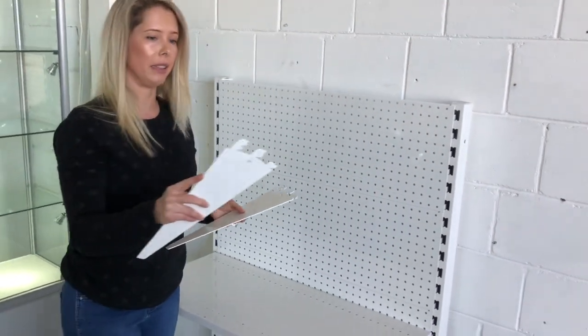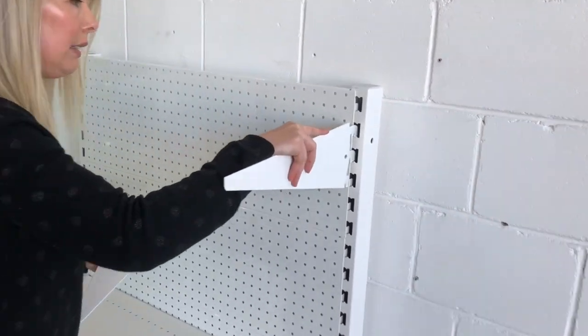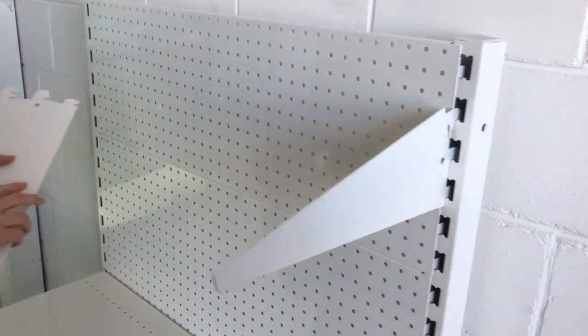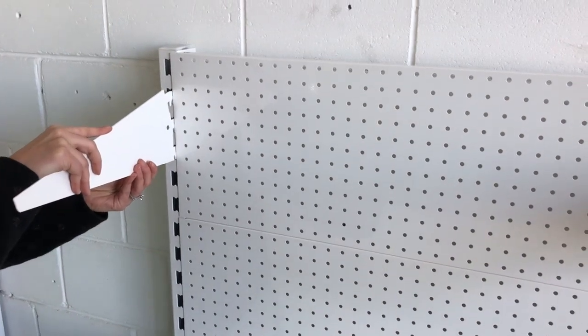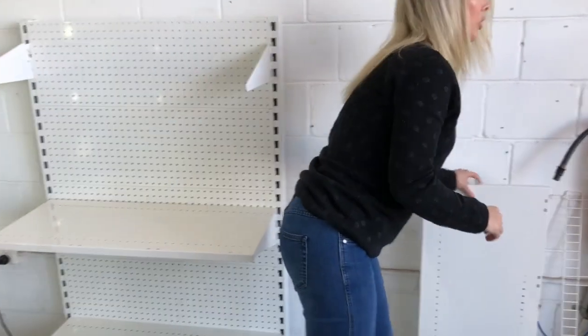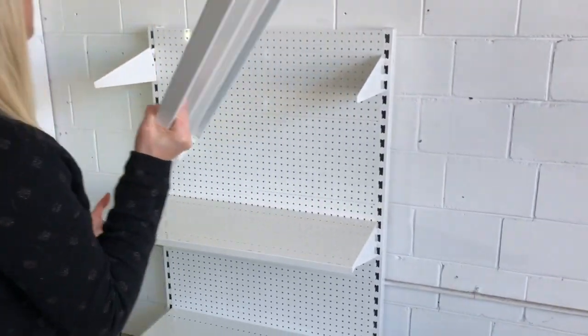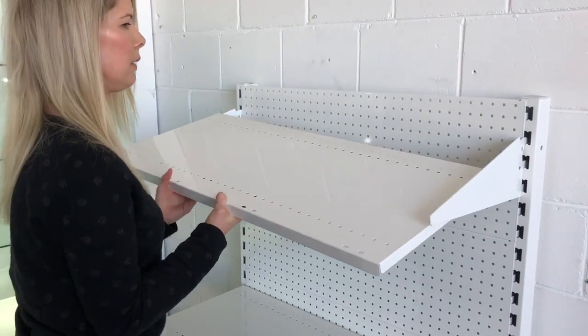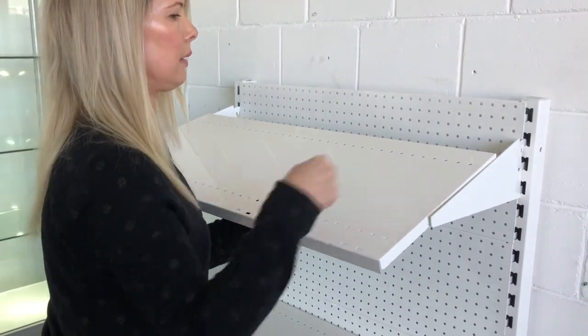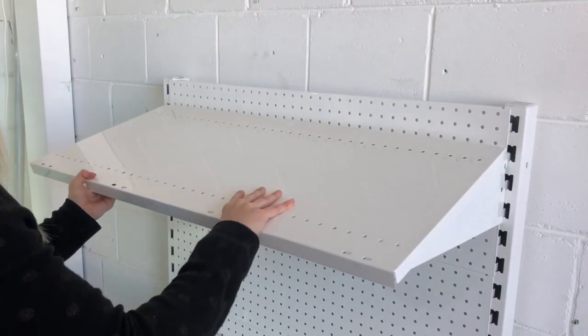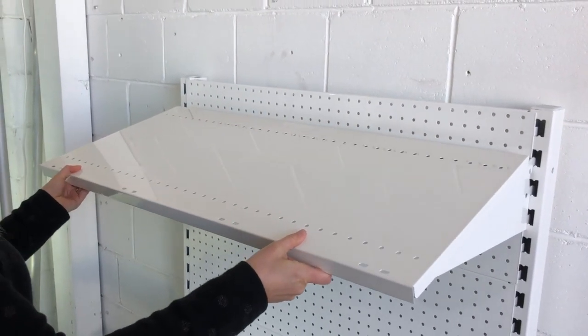Here are the instructions for the angled shelf. So it's the same bracket, we just angle it a little bit differently. Here we go. Grab your shelf, click it in, make sure it's secure.